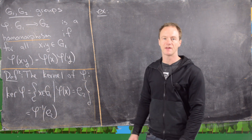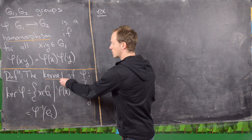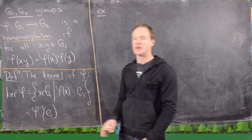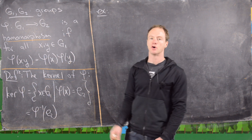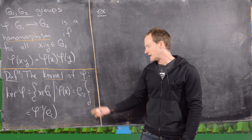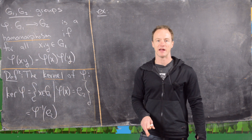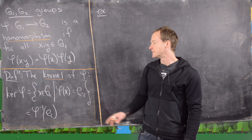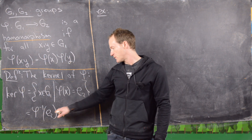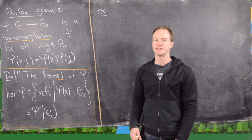An important object we want to introduce is the kernel. The kernel of a homomorphism phi is given by all elements x in G1 — in other words in the domain — where applying the homomorphism phi sends x to E2, the identity of the codomain G2. So this is everything that gets mapped to the identity, and it can be rewritten as the inverse image under phi of E2.